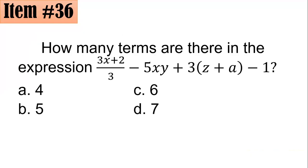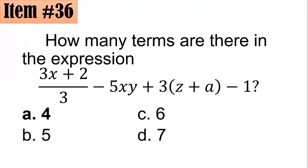Item 36. How many terms are there in the expression 3x plus 2 all over 3, negative 5xy, plus 3 times the product of z plus a, minus 1? Is it 4, 5, 6, or 7? What do you think? If you answered 4, letter A, you got it right. You might ask, sir, how come? Remember, this is a division. Terms are separated by plus or minus, but here, 3x plus 2 all over 3 is just one term because of this division sign.